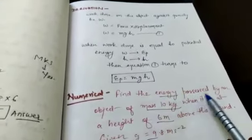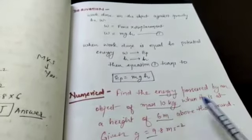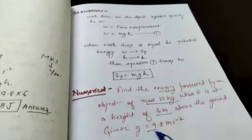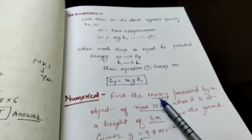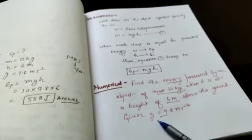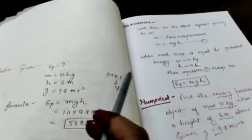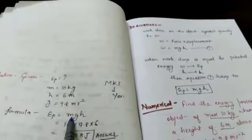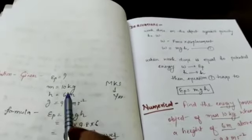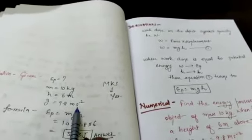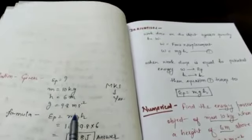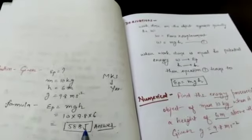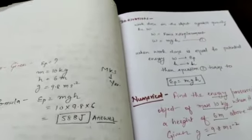Next we have numerical. Find the energy possessed by an object of mass 10 kg when it is at a height 6 meters above the ground. Value of G is given as 9.8. So the first step is to underline energy to find out. Mass is given, height is given, and value of G is given. So EP you have to calculate. EP formula is MGH. M is 10, G is 9.8, and H is 6. Solve this. You will get answer 588 Joule. So is it simple? Yes. Very good.